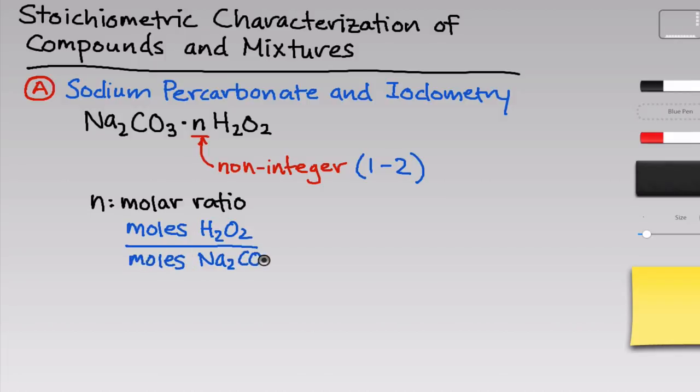One thing to note is that although n appears in the molecular formula, the ratio of H2O2 molecules to Na2CO3 molecules within a single molecule of sodium percarbonate is the same as the ratio on the molar scale, since all we're doing in going from molecules to moles is multiplying by Avogadro's number. So our goal here, since experimentally we'll be working with numbers of moles on a relatively large scale, is to determine the moles of H2O2 in a sample per mole of sodium carbonate.